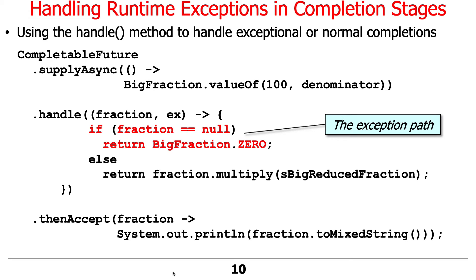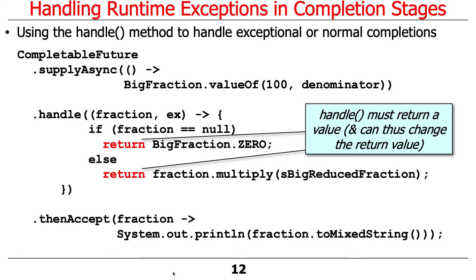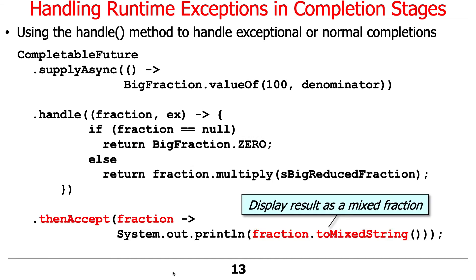In contrast, if fraction was non-null, that means the supply stage succeeded, and then we go ahead and multiply the BigFraction by some constant. Handle must return a value, and therefore it can change the return value — either zero or the result of multiplying the BigFraction by some constant. Then accept whatever we get back, whether it was zero or not, and display the results as a mixed fraction. So that's one way to do things.